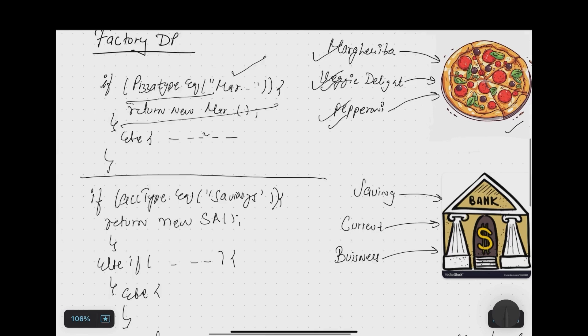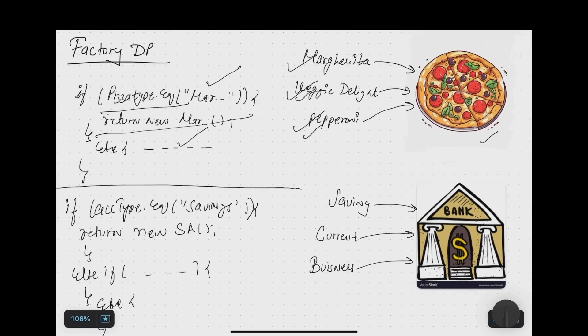This is not a very scalable solution — it's error prone and hard to scale, because as new pizzas are added to your inventory it becomes very hard to manage, with more and more if-else conditions. Also, this will violate the Open/Close Principle, one of the important SOLID principles. The Open/Close Principle states that software should be open for extension but closed for modification. Every time you add a new pizza, you have to modify the existing code.